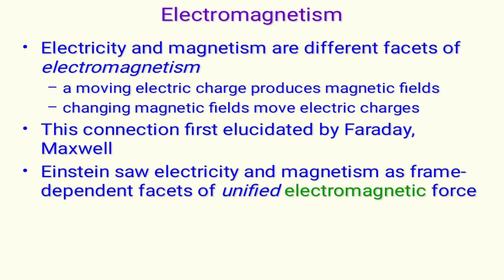When we define electromagnetism, electricity and magnetism are different facets of electromagnetism. A moving electric charge produces magnetic fields, and changing magnetic fields move electric charges.